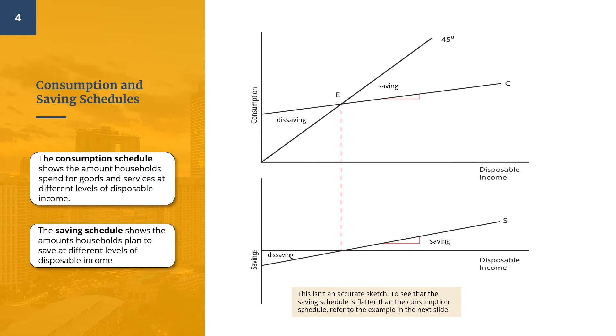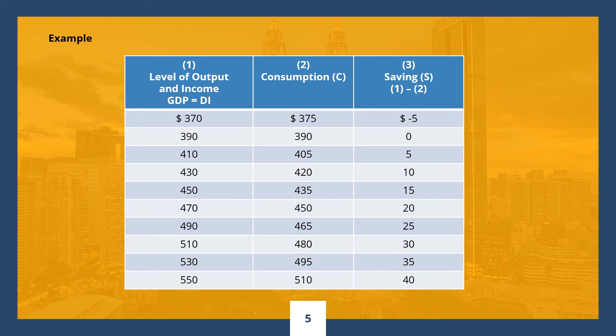Let's take a look at a numerical example to understand these relationships better. We have a hypothetical schedule showing various amounts that households plan to consume at each level of disposable income. Columns one and two show the hypothetical consumption schedule. Because saving is income that is not spent, to find the amount saved we simply subtract consumption from disposable income — shown in column three.